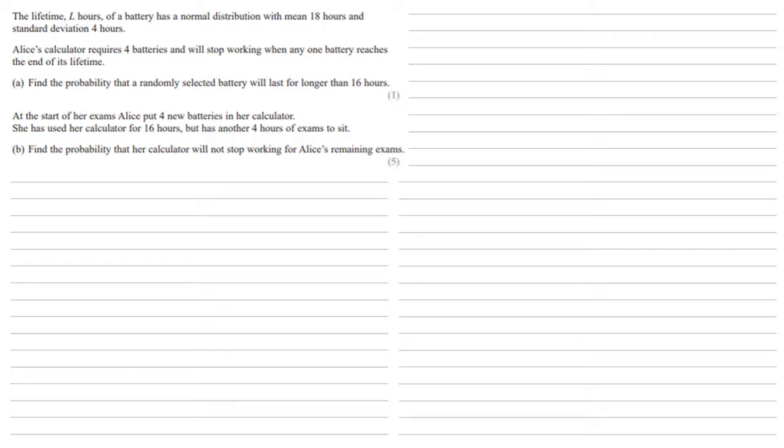The lifetime L hours of a battery has a normal distribution with mean 18 hours and standard deviation 4 hours. Alice's calculator requires 4 batteries and will stop working when any one battery reaches the end of its lifetime. We need to find the probability that a randomly selected battery will last for longer than 16 hours.